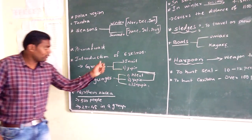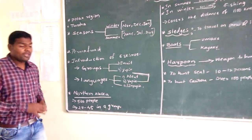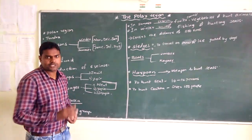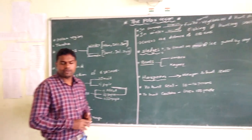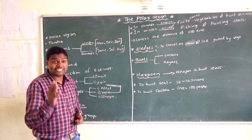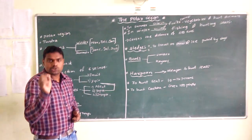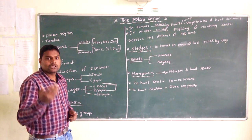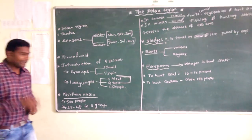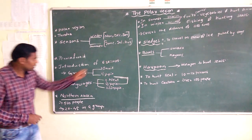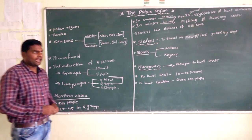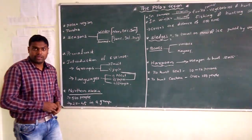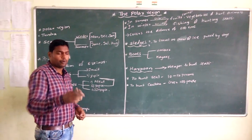The meaning of 'Eskimo' in the Eskimo language is 'snow shoe netter.' The meaning of 'Inuit' is 'the real people.' Today we are going to discuss something more about Eskimos.